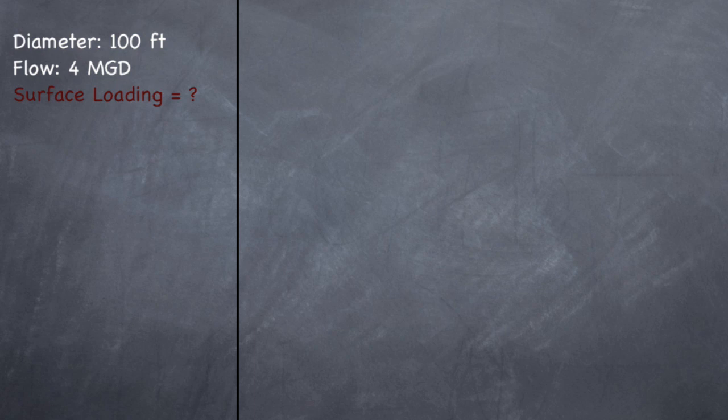So the formula for surface loading is flow in gallons per day divided by your area in square feet.